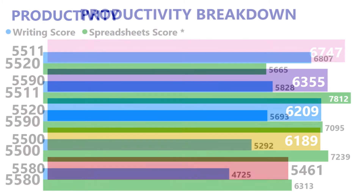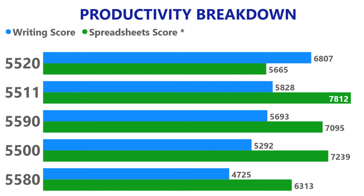Looking at the productivity breakdown, the 5520's writing score far surpasses all of the models below it. The 5511 does a pretty good job, and again the 5590 is above the 5500. Now, looking at the spreadsheet scores, the 5520 scores much lower than all of the other systems in this benchmark, which is quite odd. When I looked at the results, I noticed that when running the spreadsheet score, all of the systems — with the exception of the 5520 — used a GPU, but the 5520 used a CPU. I think that's probably because PCMark is not optimized for Iris Xe graphics, which is why the 5520's total productivity score is a little bit lower.